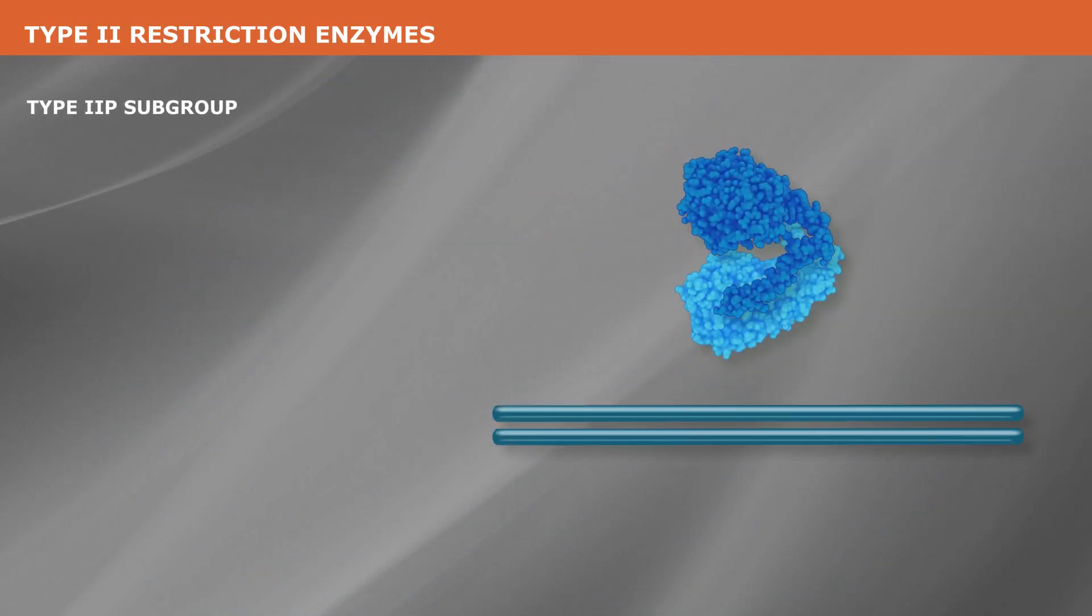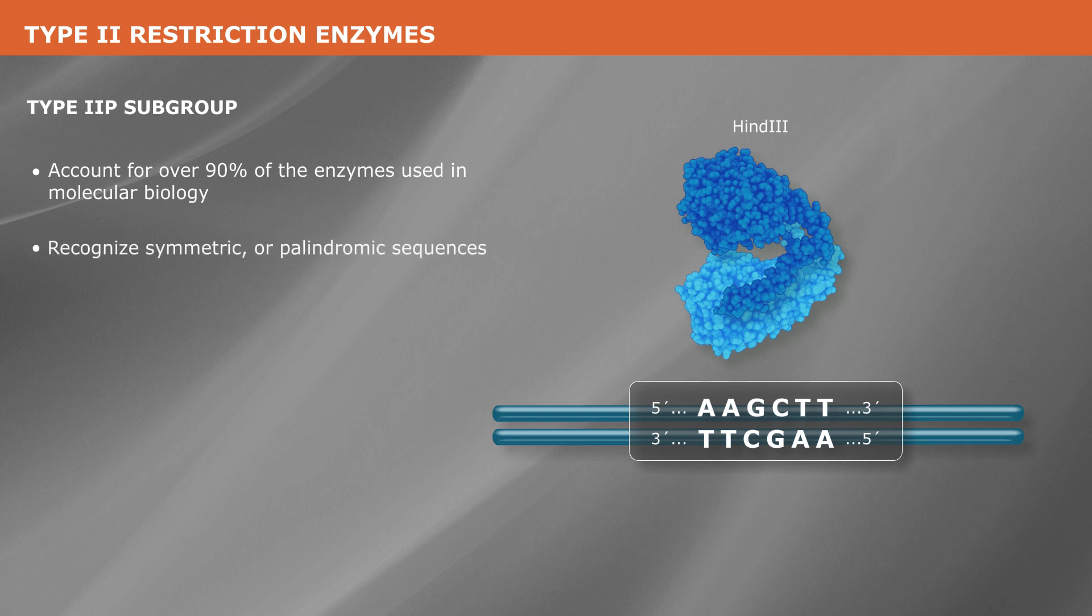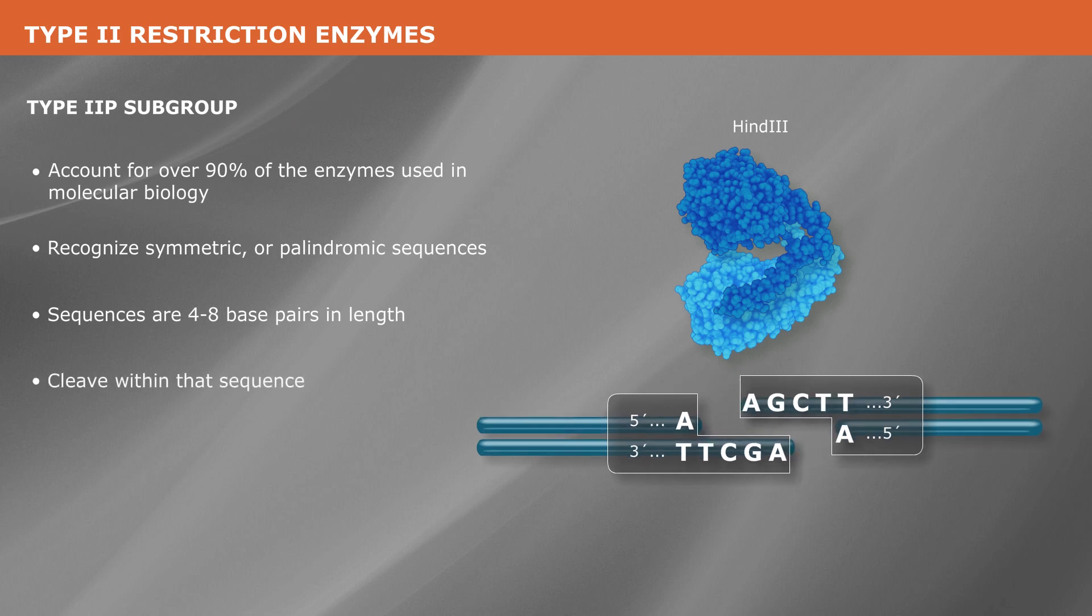Type 2P enzymes account for over 90% of the enzymes used in molecular biology. They recognize symmetric or palindromic sequences, four to eight base pairs in length, and generally cleave within that sequence.